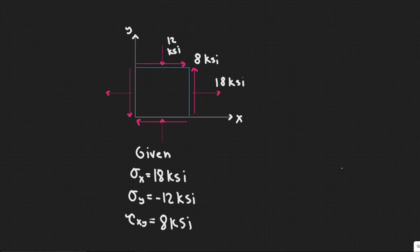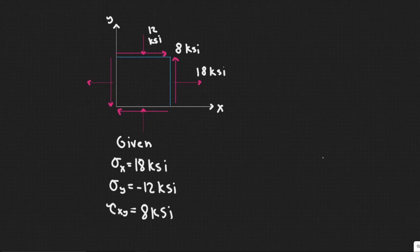And then for our shear, or the tau, if they're pointing in either the top right and bottom left like this, then the value is positive. If the arrows were pointing this here and here, it would be negative. So since it's doing top right, it's positive, so 8 ksi.